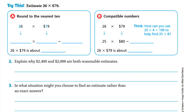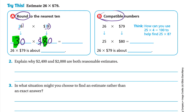Try this: estimate 26 × 79. Part A will use rounding and Part B will use compatible numbers. For rounding: 26 — to the right of the 2 we have 6, which is strong, so 20 becomes 30. For 79 — to the right of the 7 we have 9, which is also strong, so 70 becomes 80. So we multiply 30 × 80.